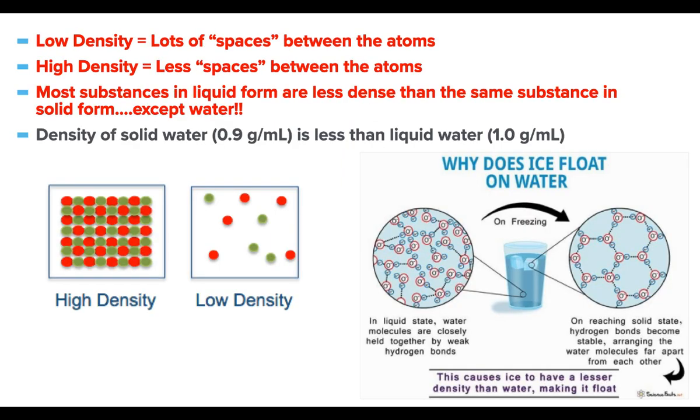So what does this even mean, density, when you start thinking about it from an actual molecular standpoint? If something has a low density, like air, what that means is there's lots of spaces between the atoms. If a substance has a lower density, it has more spaces between its atoms. If it has a higher density, like steel, there's less spaces between the atoms, less room for them to move around.